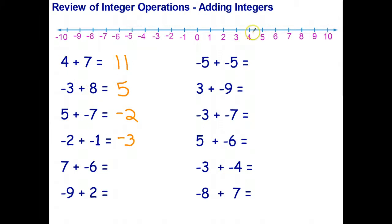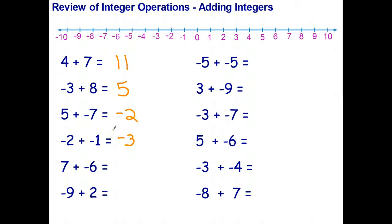You can also look at the number line for these. If I start at four and go seven to the right, I end up at positive eleven. The second one: if I start at negative three and go eight to the right, three takes me to zero and another five takes me to five. So negative three plus eight is five.